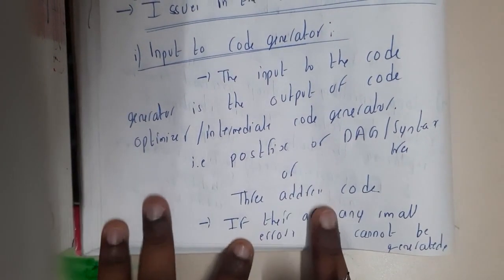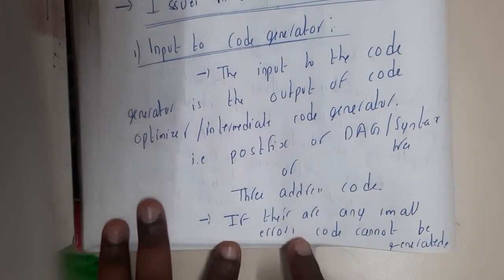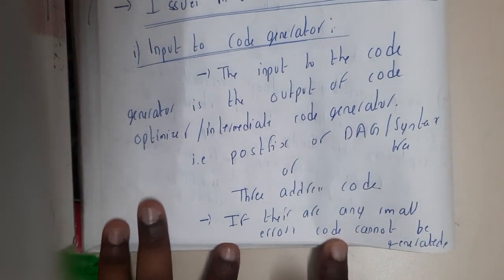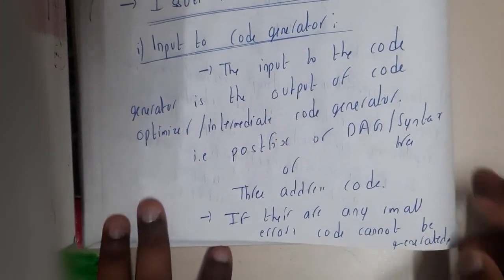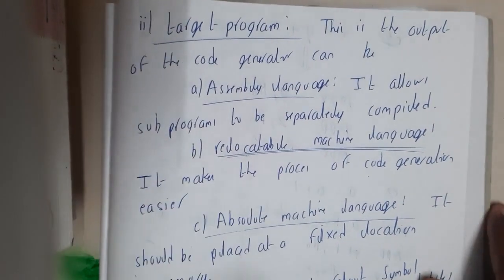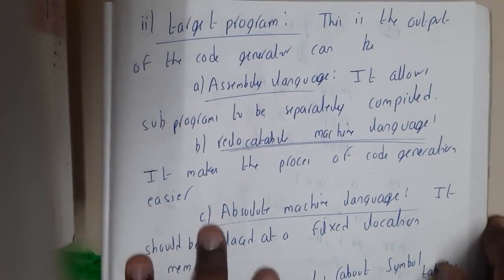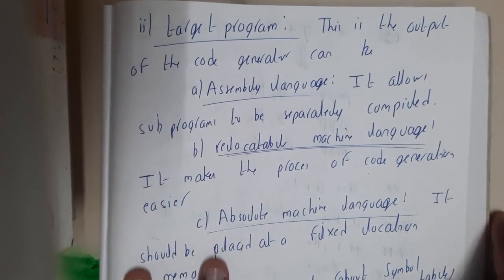If there are any small errors in the error code, then code cannot be generated. Basically, code cannot be generated if there are any kind of errors.